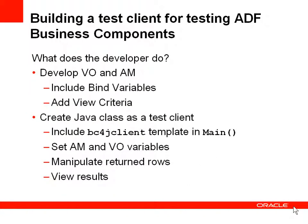So what do you do that's different? Not much. You basically still define your view objects and your application modules like you always do. You're going to include any bind variables and add any view accessors. Then, in the same project, create a Java test client. In the main method, type in BC4J client and you can invoke a template. You'll set some application module and VO variables, write the code to manipulate the returned rows, and then view the rows and the messages in the window.